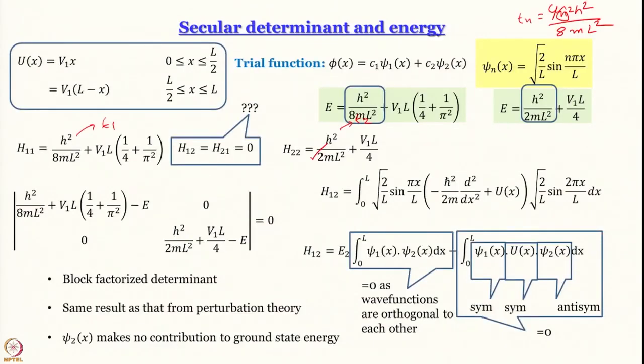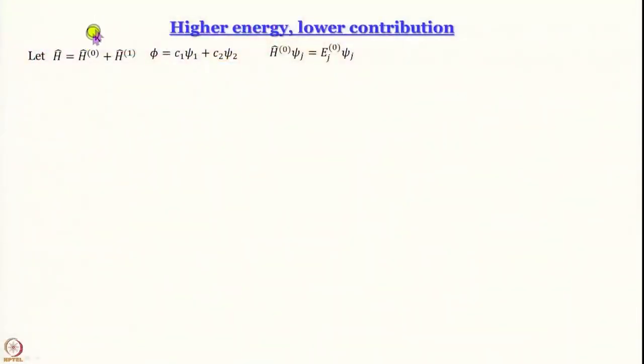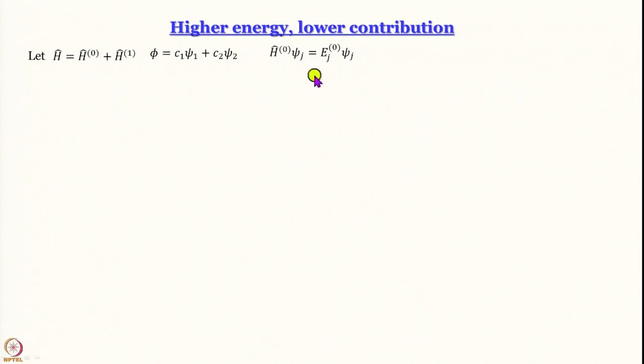This leads to the general observation: when a trial wave function is expressed as a linear combination of orthonormal functions, higher-energy functions contribute less to the ground state. Writing the Hamiltonian as H = H⁰ + H¹ and the trial function as φ = c₁ψ₁ + c₂ψ₂, where the ψ's are eigenfunctions of H⁰ with eigenvalues E_j⁰.